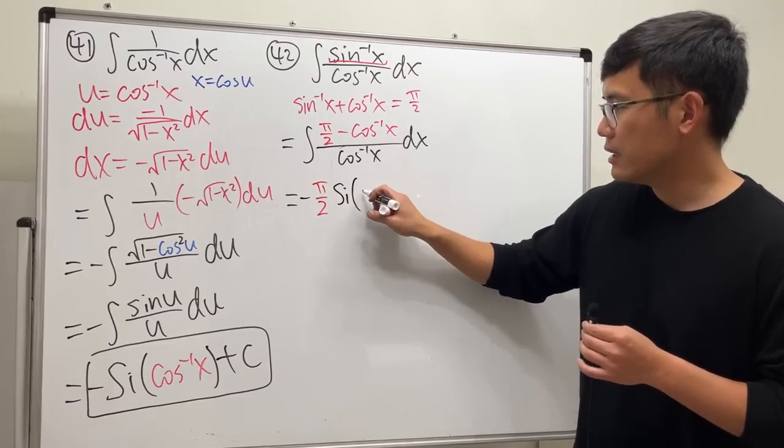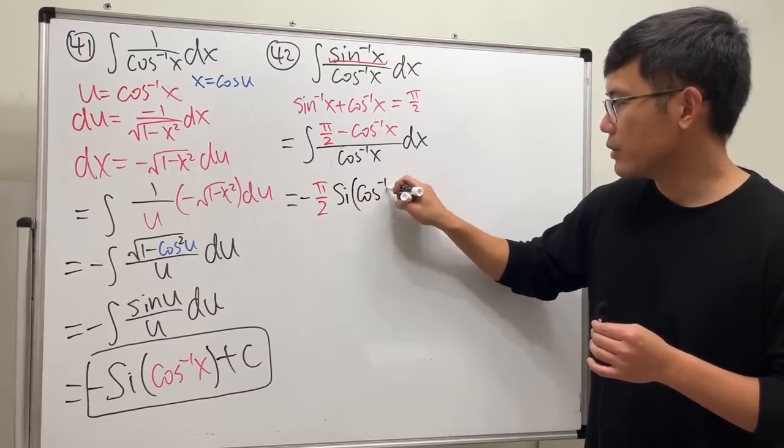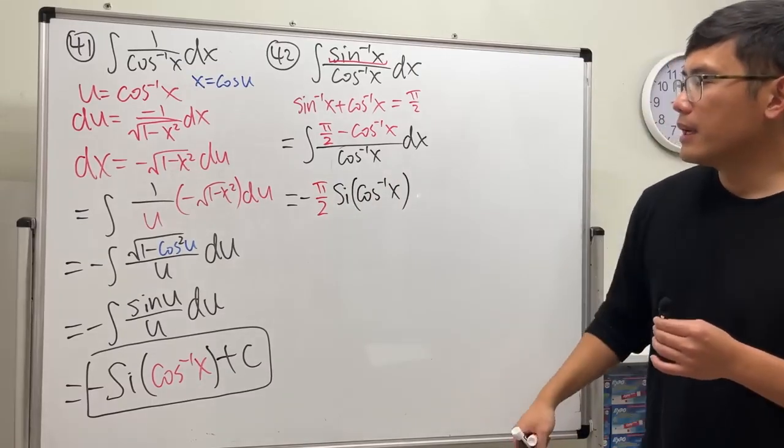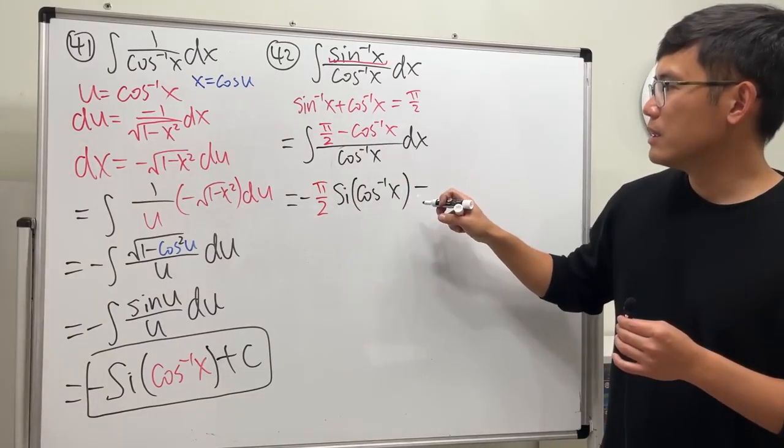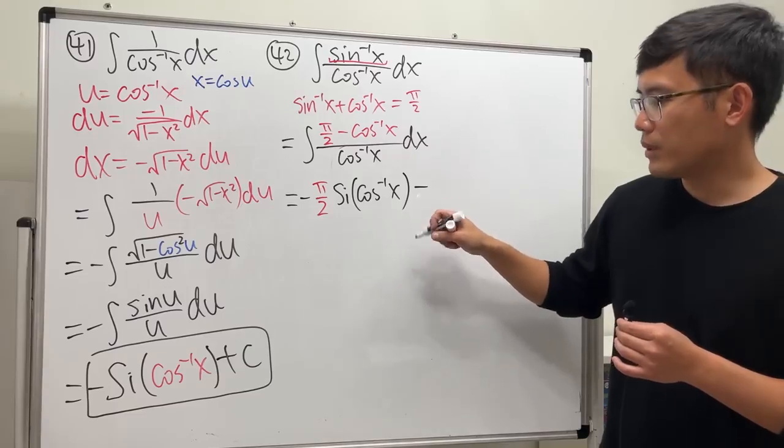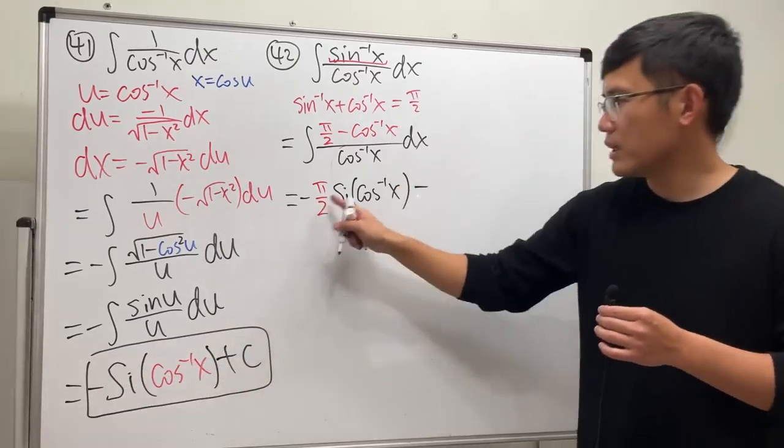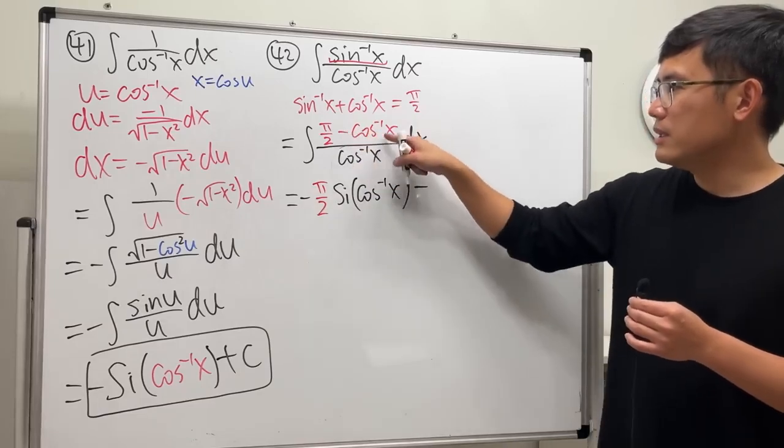Si, and then inverse cosine of x. All right. And the other part is just the integral of minus. Why? Oh yeah, because this negative is for that. And then minus, and then this other part is just 1.